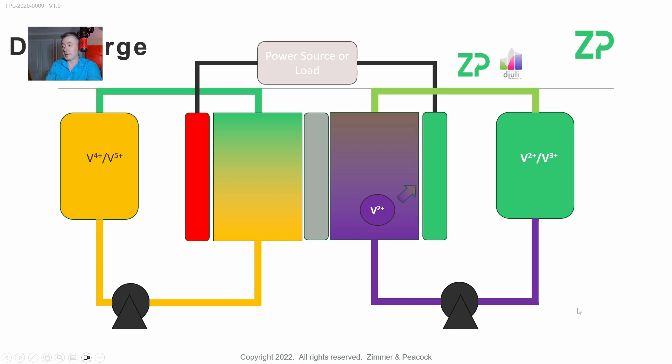plus (V2+), and we are in the discharge cycle. Vanadium two plus is giving electrons to the electrode, and these electrons are traveling around an external circuit. They enter and transition to